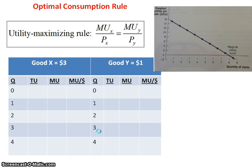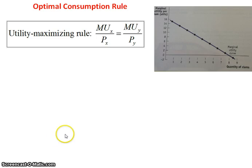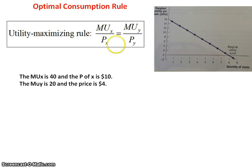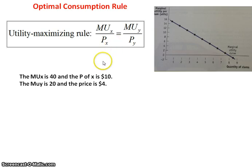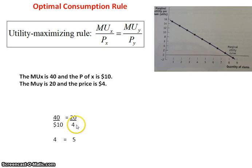The other thing to look at is the optimal consumption rule. With these problems, instead of a budget constraint where you spend the person's full income, you have to figure out how to make the ratios meet one another, and you're not given a table. Instead it's more like a word problem. For example: the marginal utility of X is 40 and the price of X is $10; the marginal utility of Y is 20 and the price of Y is $4. Set up the ratios: 40 divided by $10 equals 4, and 20 divided by $4 equals 5.